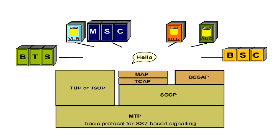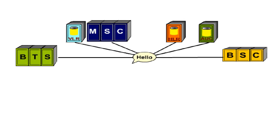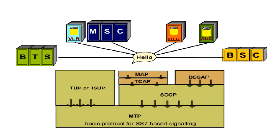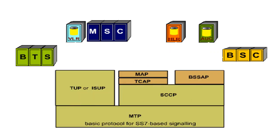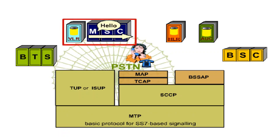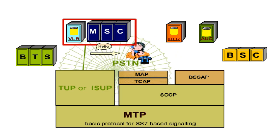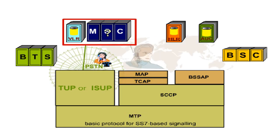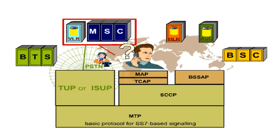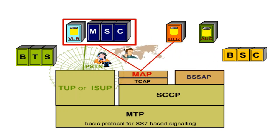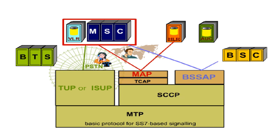Communication between network elements always takes place using the relevant protocols, each protocol relying on the protocols of the layers below. For example, the signalling from the MSC to a PSTN for call setup is carried out by TUP, which is based on MTP in both elements. Or, if an MSC wants to know the current location of a subscriber, it communicates with the responsible HLR using MAP. In this communication, TCAP, SCCP and MTP are required. The BSSAP protocol, on the other hand, is only needed by the MSC when it wants to communicate with the BSC.